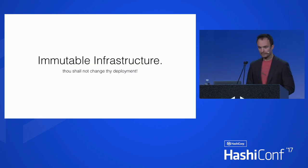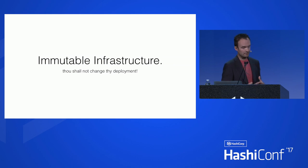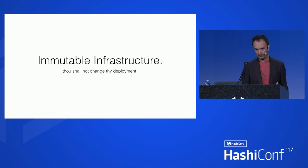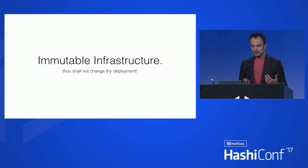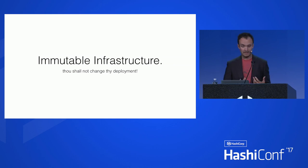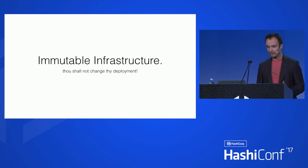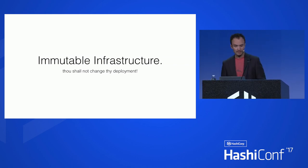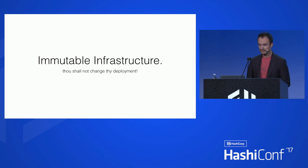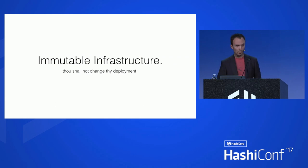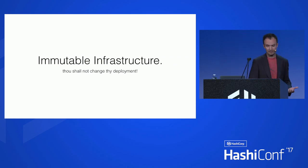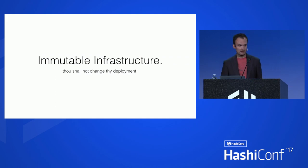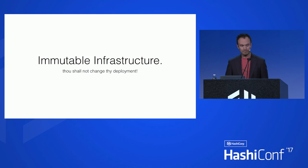Immutable infrastructure — what is it? It's the practice of replacing software components rather than upgrading them in place. Machines should not be long-lived; they should instead be dynamically provisioned from fixed images and destroyed as needed. Application systems are versioned and then replaced with newer versions as time passes. Operators can move environmental conditions around the application, but the application itself should never deviate from the build-time artifact — typically a container or a virtual image.